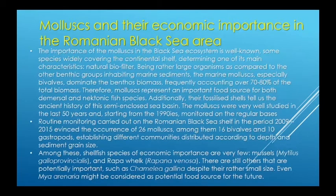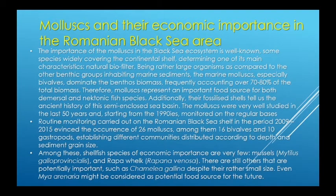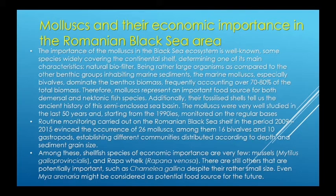The importance of molluscs in the Black Sea ecosystem is well known. Some species widely cover the continental shelf, determining one of its main characteristics as a natural biofilter. Being rather large organisms compared to other benthic groups inhabiting marine sediments, marine molluscs — especially bivalves — dominate the benthos biomass, frequently accounting for over 70–80% of the total biomass. Therefore, molluscs represent an important food source for both demersal and nektonic fish species. Additionally, their fossilized shells tell us the ancient story of this semi-enclosed sea basin.